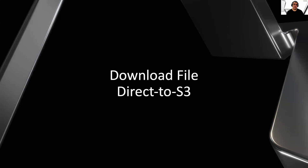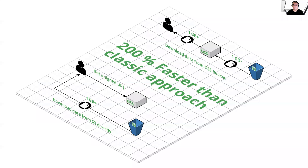Let's get started with Download Files Direct from S3. In today's workflow, we download our files from the Object Storage service, but in the background this service makes a request to S3 to obtain that file. In this example, we'll be focusing on larger files — files over 1GB in size — to compare performance to the newer approach.